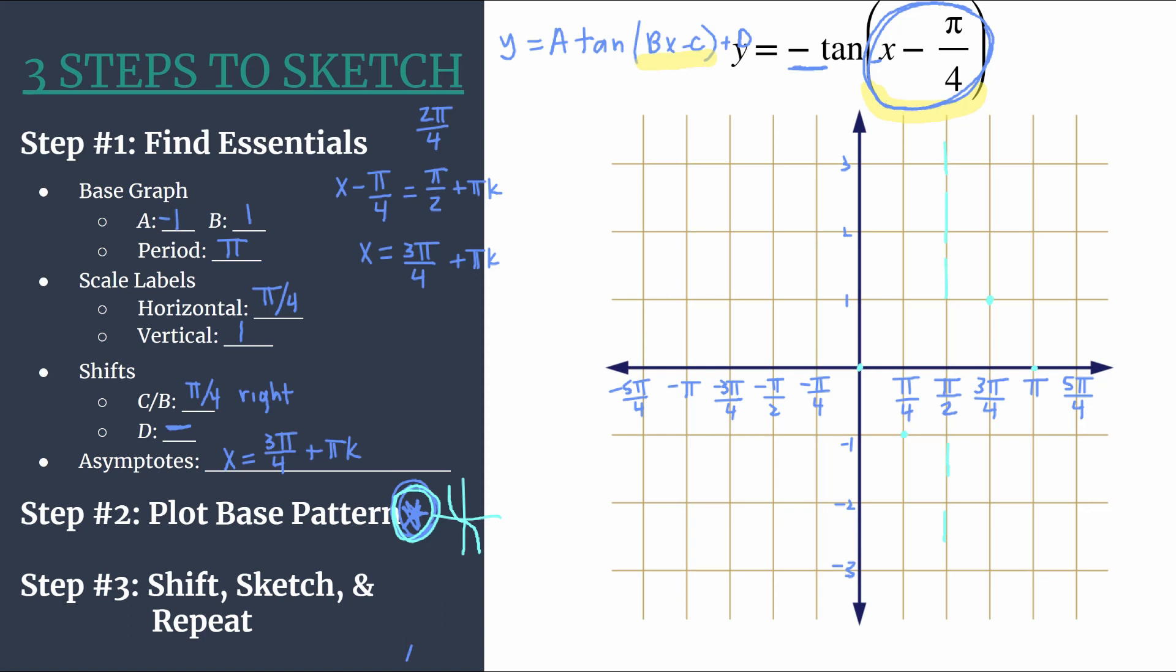Now I'm going to switch to a final color, I'll switch to green. We're ready for step three. We will shift this temporary base pattern blue graph, sketch our tangent curve, and then repeat for a couple more cycles. We only had one shift. If we had multiple shifts, like a vertical shift as well, we could accomplish both at the same time. Say we were moving up one, it's pretty easy to move right π over 4 and up one at the same time. But for this equation, it's a little simpler. We will take each of our light blue points and move them right π over 4, which is one grid unit. We have our first point here.